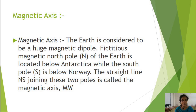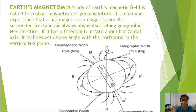The straight line NS joining these two poles is called the magnetic axis, denoted M-M dash. In the diagram, M-M dash is the magnetic axis passing through the two poles — the south pole and the north pole.